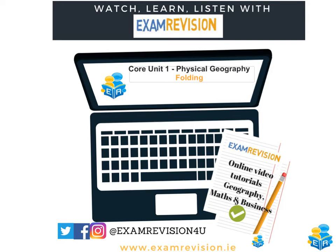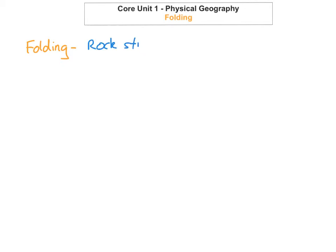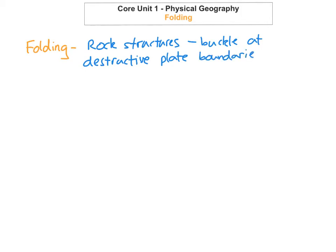Hi guys and welcome to today's tutorial. Today we're going to focus on folding — we're on the chapter of folding and doming, but we'll focus on folding. Folding is when rock structures that were once flat buckle at destructive plate boundaries. Because of all the pressure at destructive plate boundaries, it causes the rock to buckle. One thing to note is that most folding is caused by horizontal compression of the earth's crust.